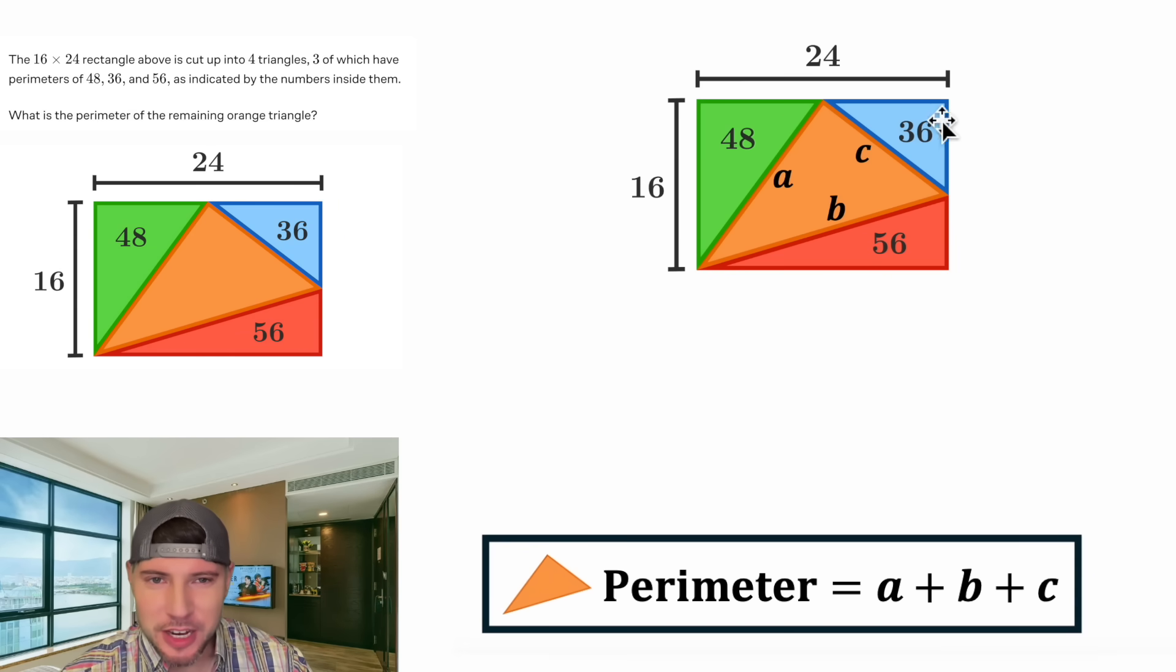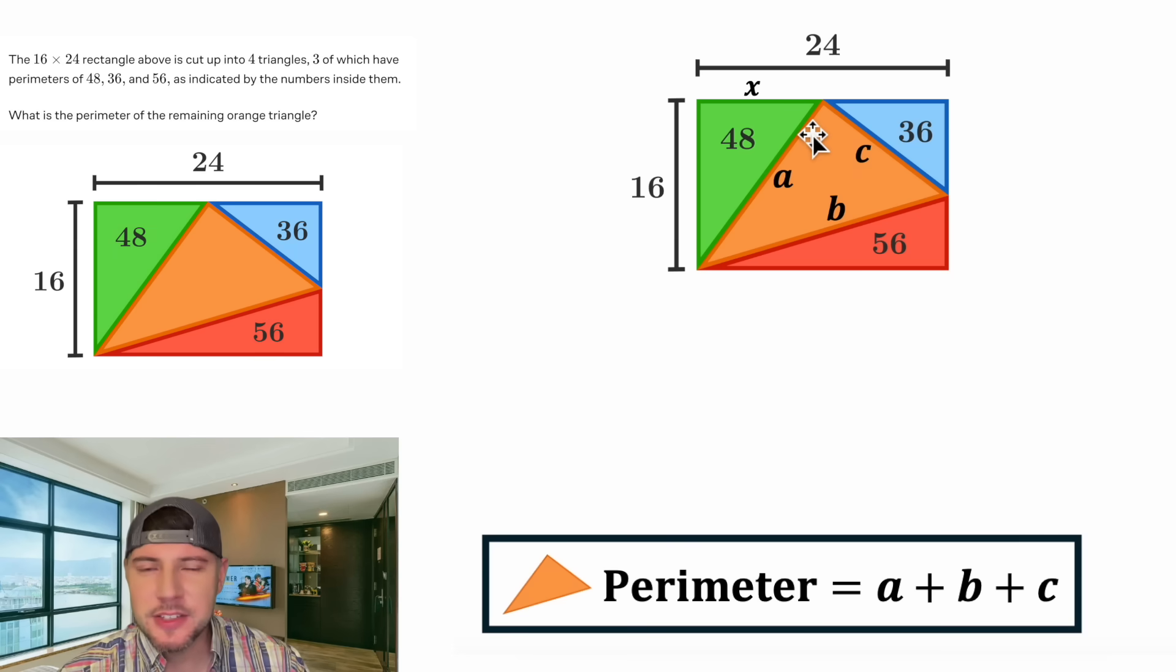Now let's introduce some variables for the other sides of these triangles. Let's move this up, and let's call the last side length of the green triangle X. And then since this entire distance is 24, and this is X, that means this side of the blue triangle is 24 minus X. And then let's call this side of the blue triangle Y. And then since this entire height is equal to 16, this side of the red triangle will be 16 minus Y. And the base of this red triangle will equal 24, just like the base of the rectangle. Now we have a number or variable to represent every side of each of these triangles.